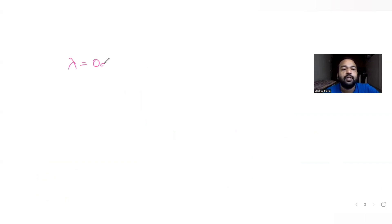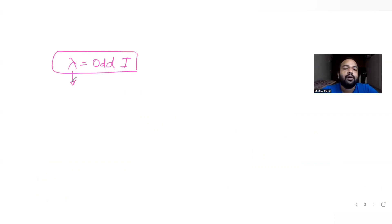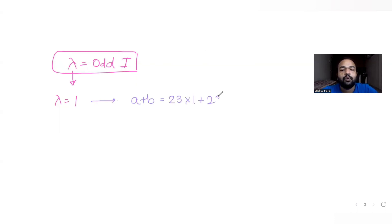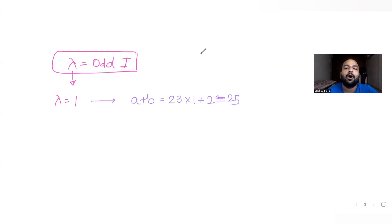So λ must be any odd integer. If I put λ = 1, I get a+b = 23×1 + 2 = 25. We need to find how many pairs of a and b satisfy the condition that their sum equals 25.